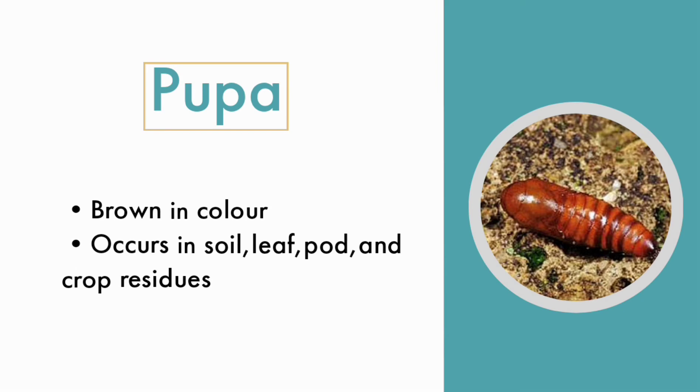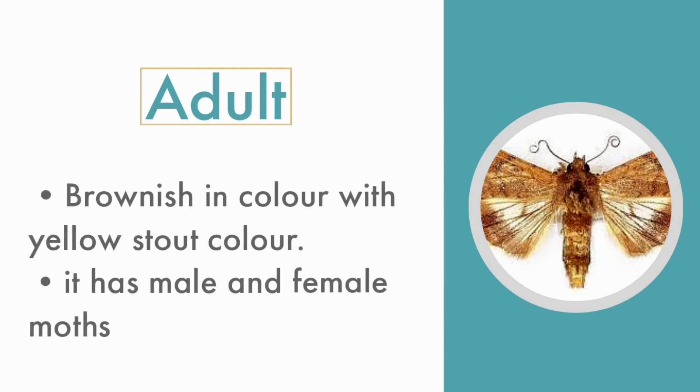The adult has male and female moths. Generally, the adult is brownish in color with yellow markings.